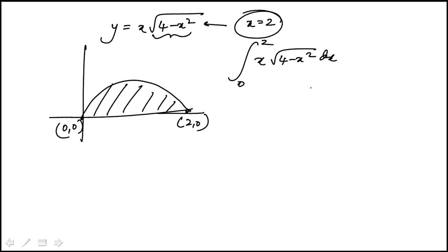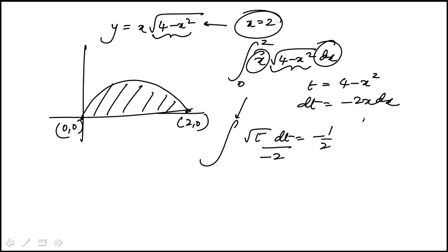What we're going to do is replace 4 minus x squared with t. So in this case dt would be minus 2x dx, which is this piece. So this becomes the square root of t, that piece, and then it would be dt over minus 2. So I'm going to take out the minus half.